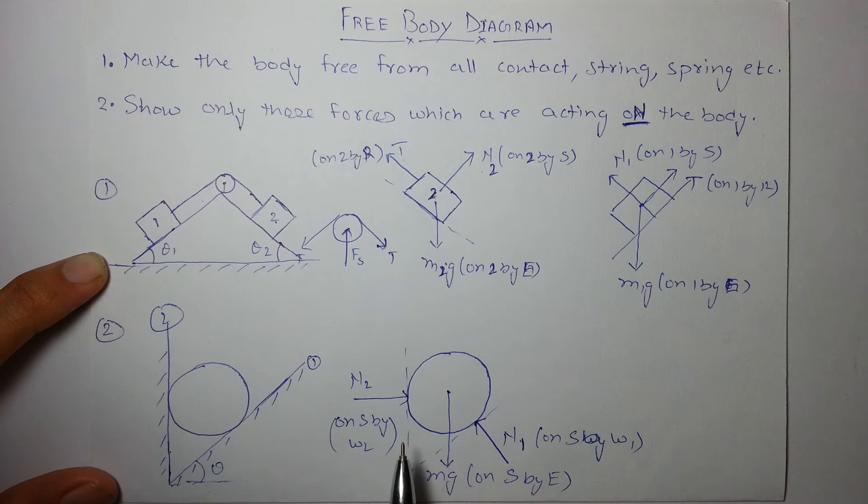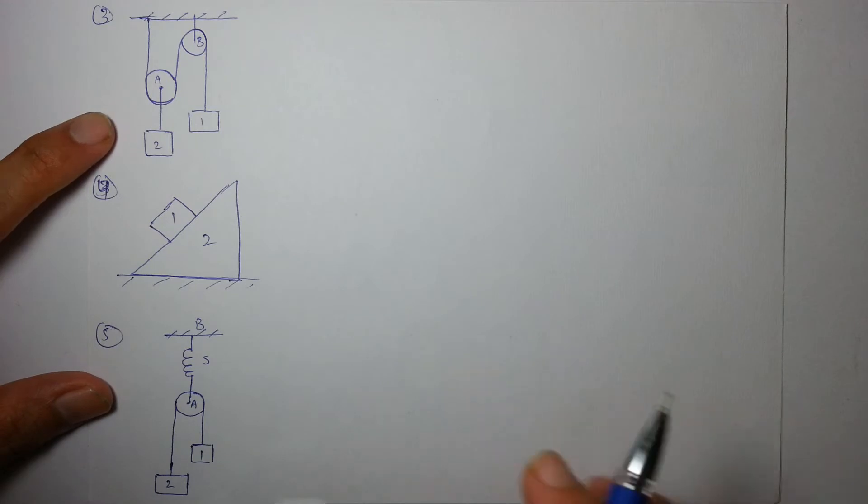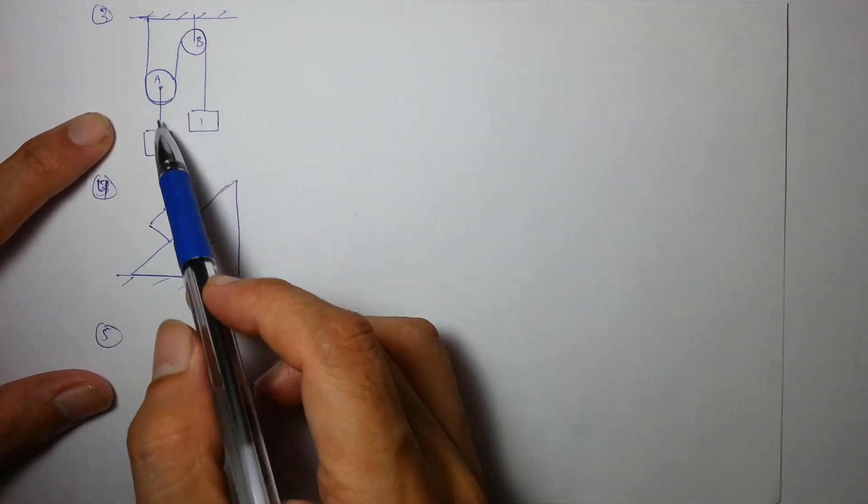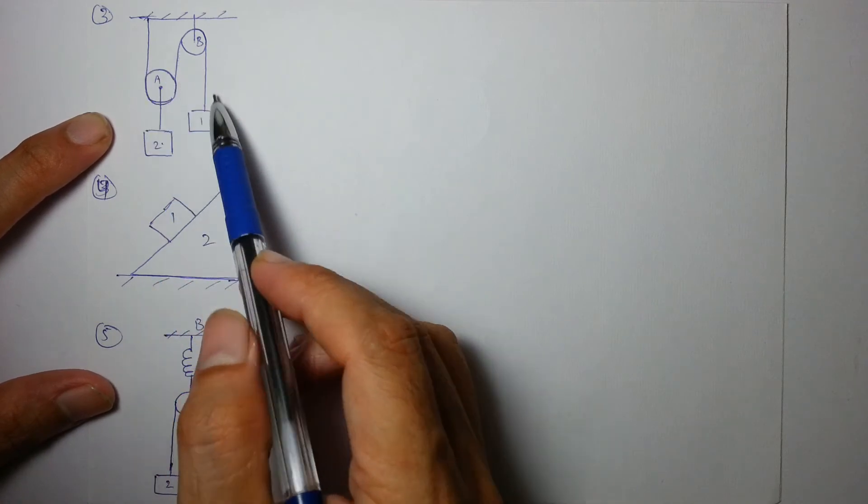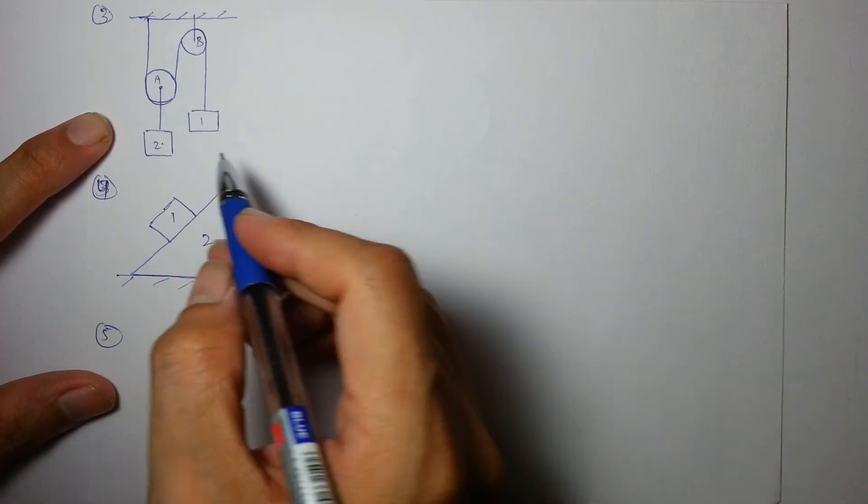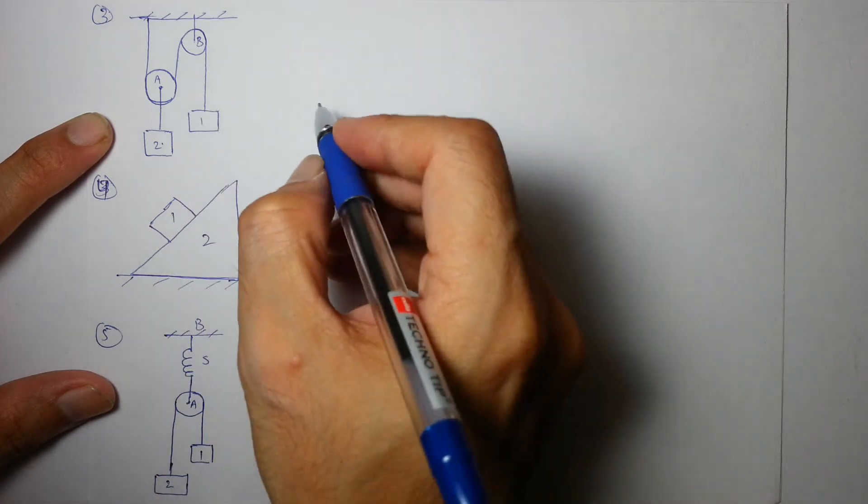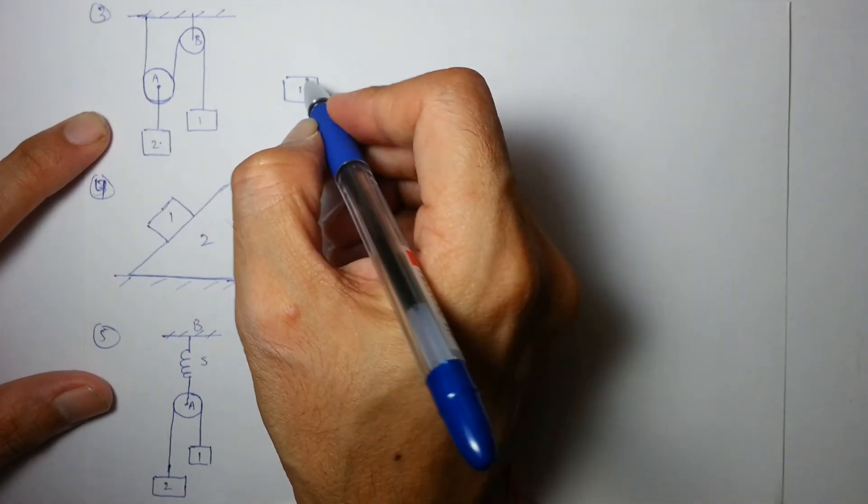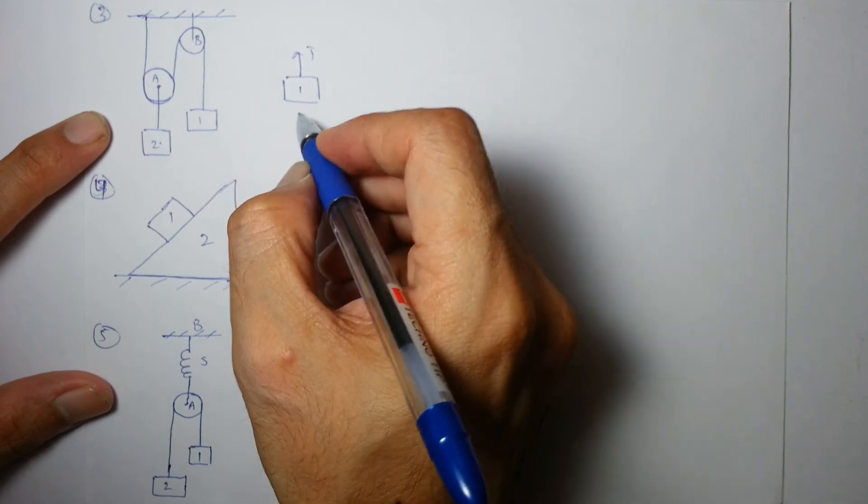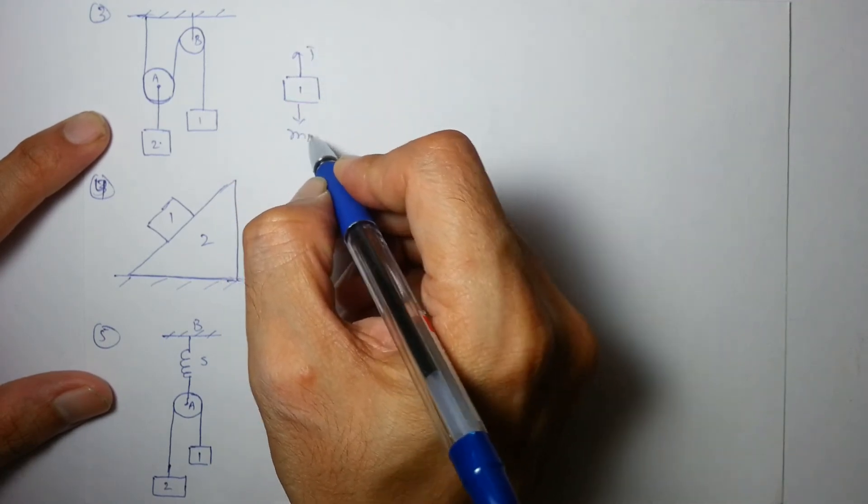In the next one, these are two pulleys, light pulleys and a string, and two blocks. We have to draw their diagrams. Let's start with the FBD of one. This is one, so it is t and it is m1g. These are the only two forces, no contact, so no normal reaction.